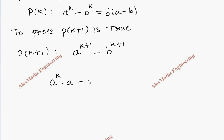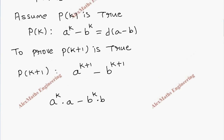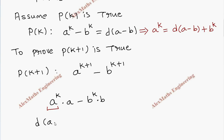We write a^(k+1) minus b^(k+1) as a^k · a minus b^k · b. From the inductive hypothesis, a^k equals some constant d times (a - b) plus b^k. We substitute this in place of a^k, so the expression becomes (d(a - b) + b^k) · a minus b^k · b.